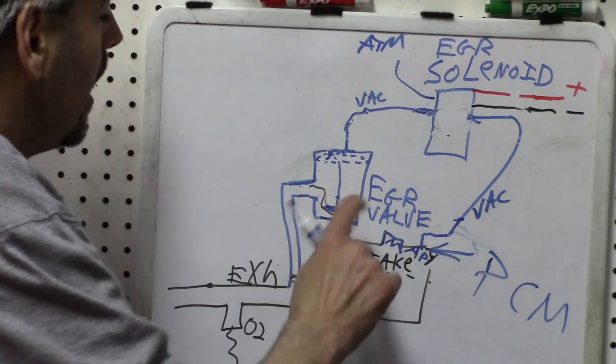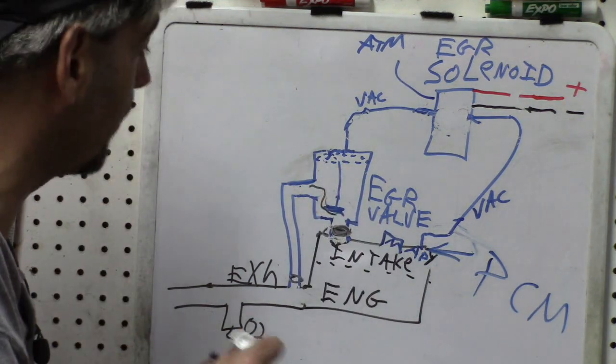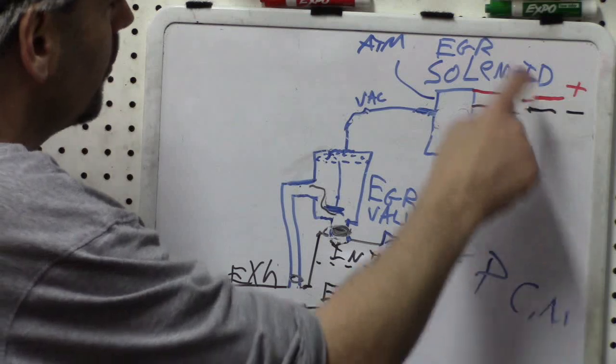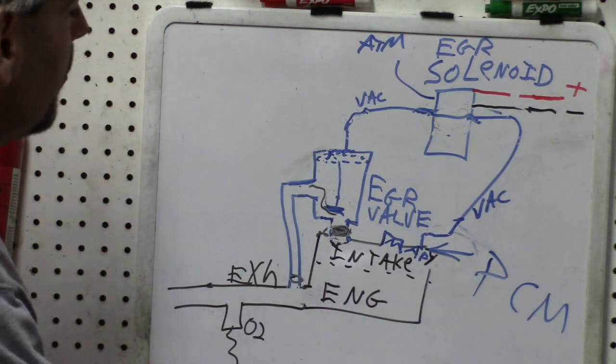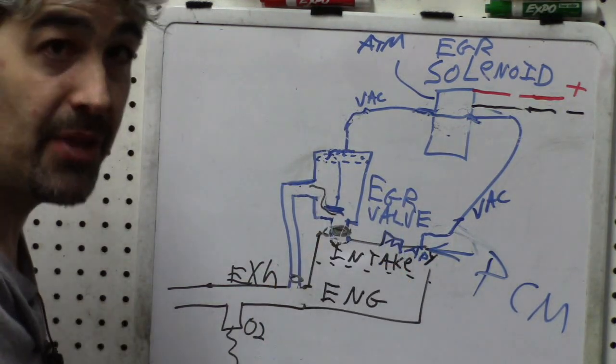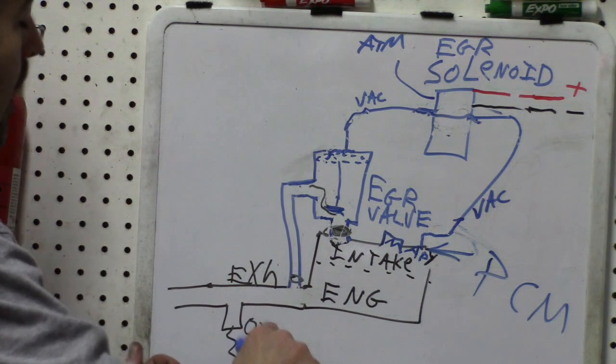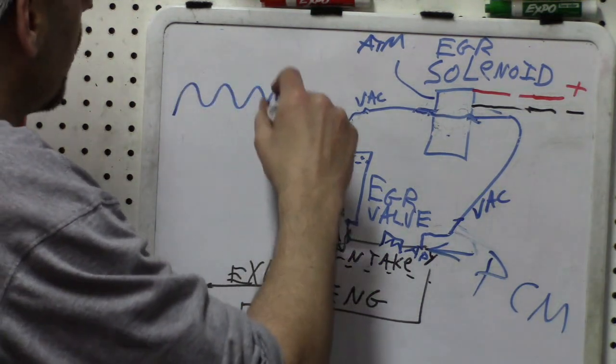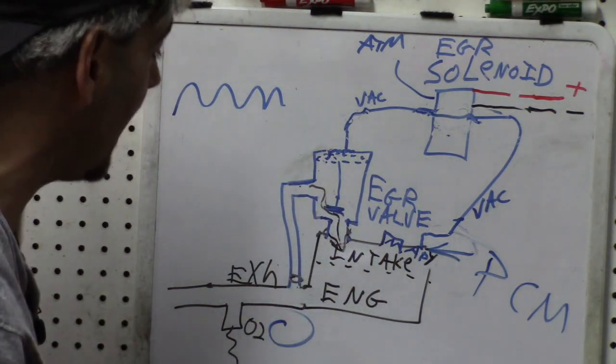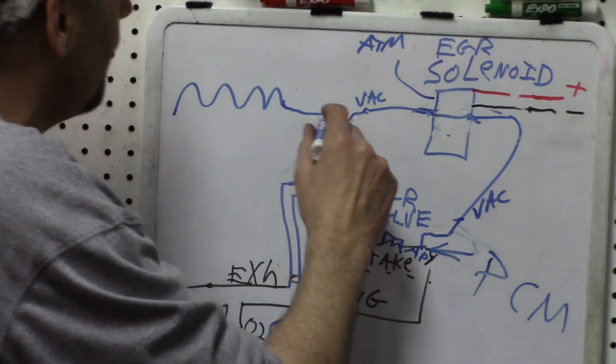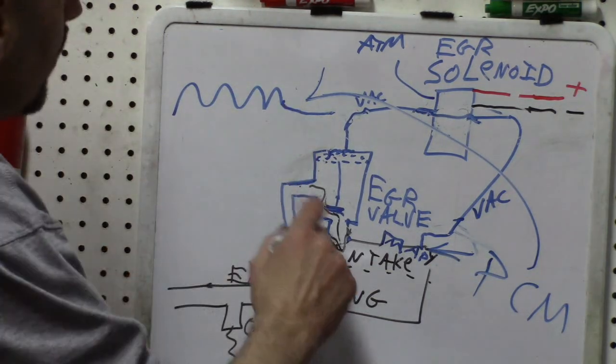Obviously you can see where a carbon blockage here would certainly cause an insufficient flow error because the PCM would of course command the solenoid open, solenoid opens, we get vacuum through there, pintle lifts, but there is no EGR flow through here, no change in the MAP sensor. It is also, I believe on some systems done through the O2 sensor. Obviously you would have your O2 sensor trace going along, but if EGR gas comes through into the intake, it is going to have a leaning effect. And of course, your PCM can look and see that there is that desired effect as a result of the EGR.